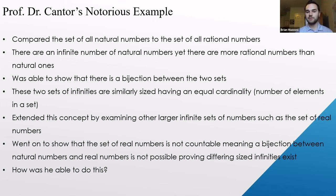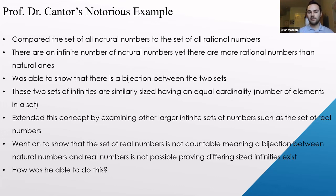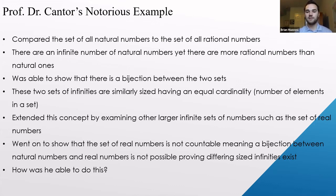Cantor showed there is a bijection between natural numbers and rational numbers — meaning they have equal cardinality, the number of elements in a set. He then extended this to real numbers and showed that real numbers are not countable, using his famous diagonal argument. Consider infinite sequences of binary numbers: there will always be a new sequence s not corresponding to any row, obtained by flipping each diagonal value to its complement. No matter how many decimals between zero and one you list, you cannot list them all — the set is uncountable.